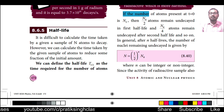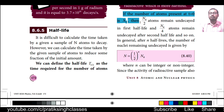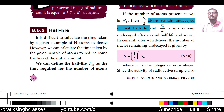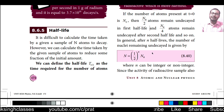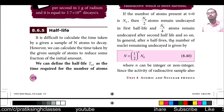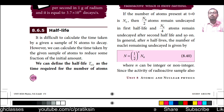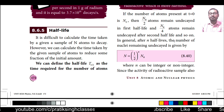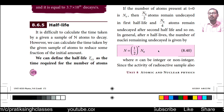If the number of atoms at t = 0 is N₀, then N₀/2 atoms remain undecayed after the first half-life. After the second half-life, N₀/4 remain; after the third, N₀/8, and so on. This follows a geometric progression, similar to GP sequences studied in mathematics.